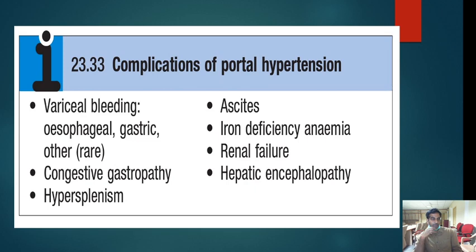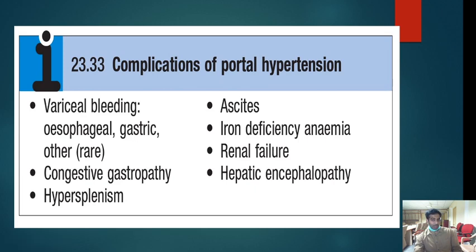Complications of portal hypertension: the most important is variceal bleeding, with patients presenting with upper GI bleed from esophageal and gastric varices, as well as congestive gastropathy. Hypersplenism leads to splenomegaly and excess destruction of blood cells, causing thrombocytopenia. Other complications include ascites, iron deficiency anemia from massive GI bleeds, renal failure, hepatorenal syndrome, and hepatic encephalopathy.